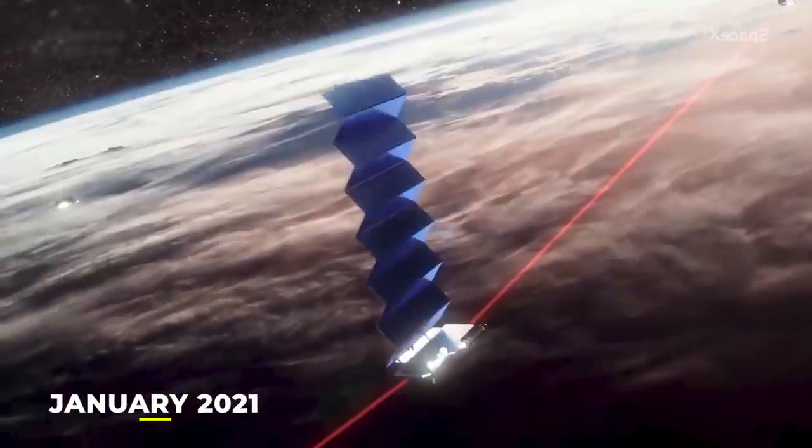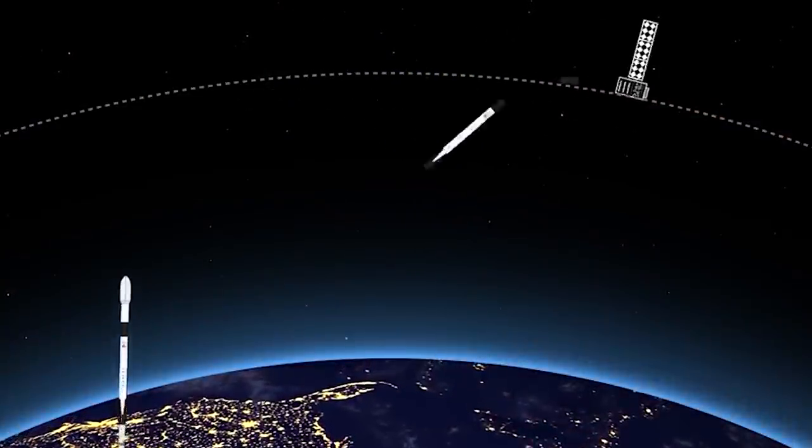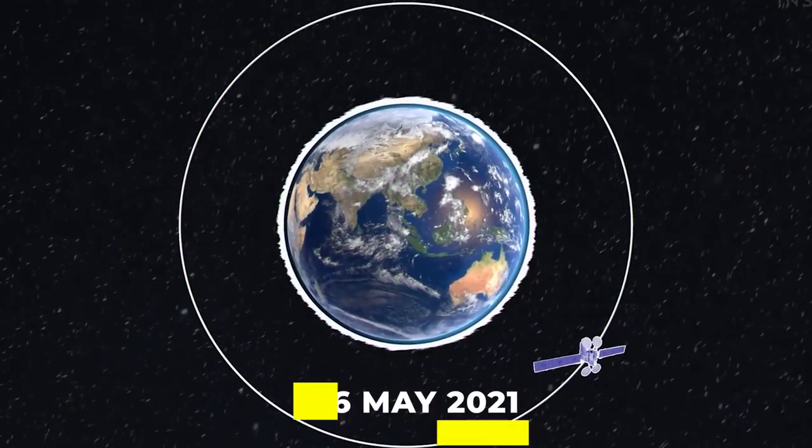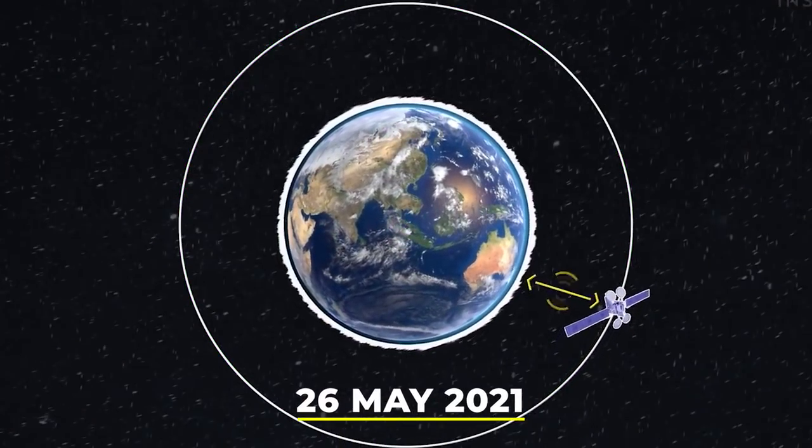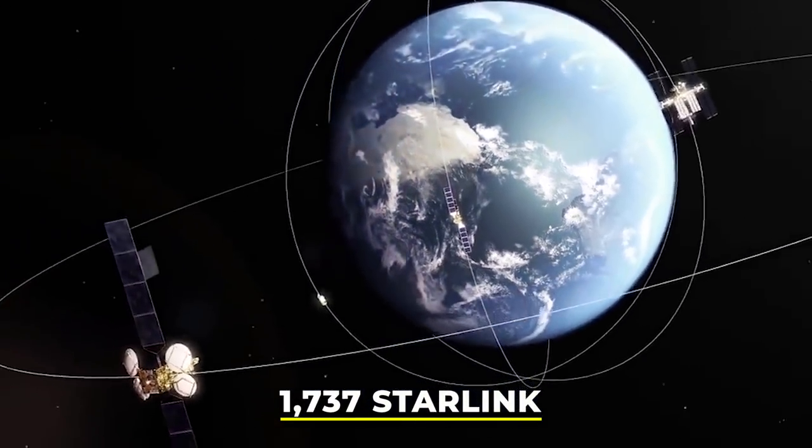In January 2021, SpaceX launched 60 satellites into orbit from the Kennedy Space Center using the reusable Falcon 9 orbital rocket. As of May 26th, 2021, SpaceX has deployed over 1,737 Starlink satellites across dozens of successful launches.